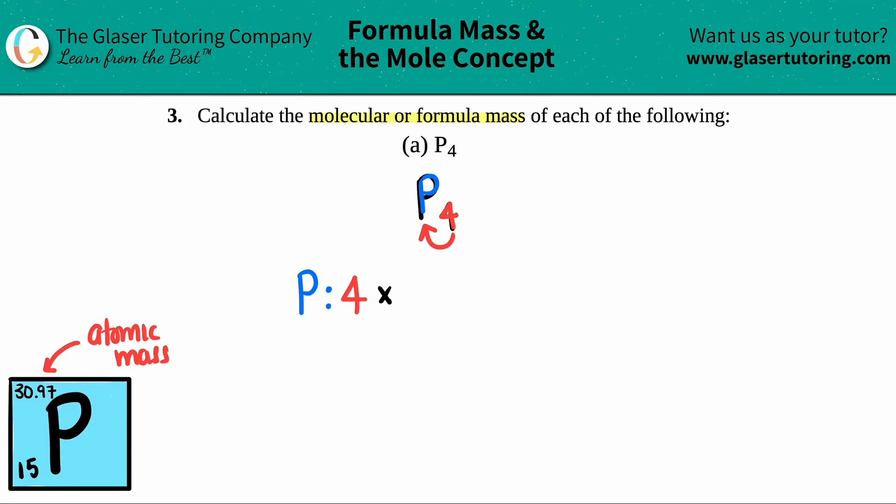And since they're asking for the molecular mass, the formula mass, generally, they want this in AMU. AMU stands for atomic mass unit. So all we're going to do is we're just going to take that four and multiply it by the mass number. Now, just know that the 15 is the atomic number. It's the number of protons, right? The 30.97 is the average atomic mass. I'm going to take the four and times it by 30.97 AMU.